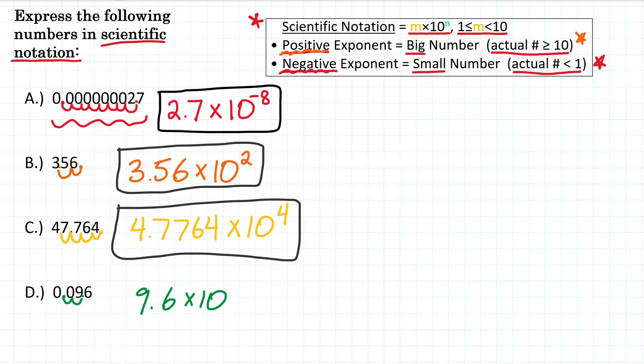And what's our power? Well, we moved 2 places to the right. So our value is 2, and 0.096 is less than 1. That's a small number. And for small numbers, we have negative exponents. Alright, so for D, 0.096 is the same as writing 9.6 times 10 to the negative second.